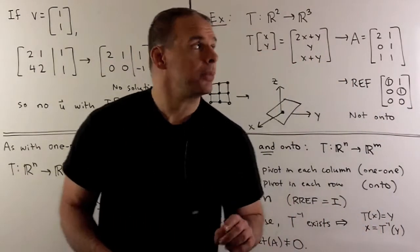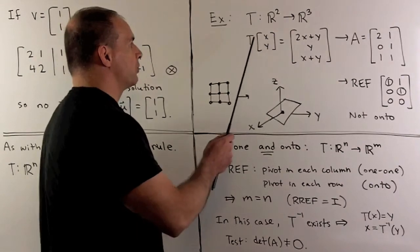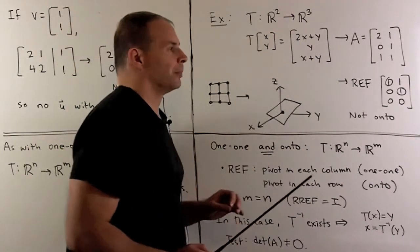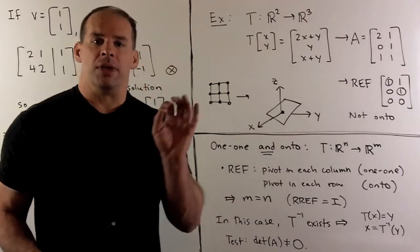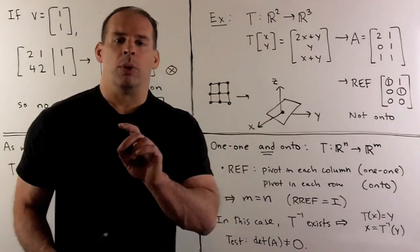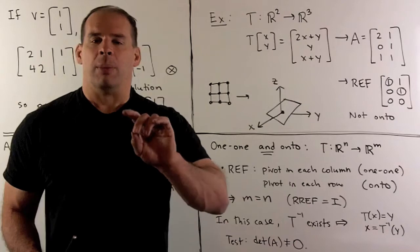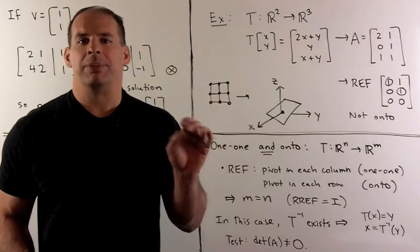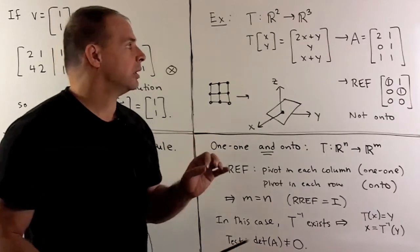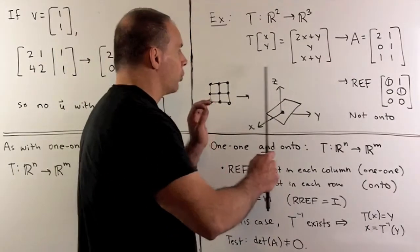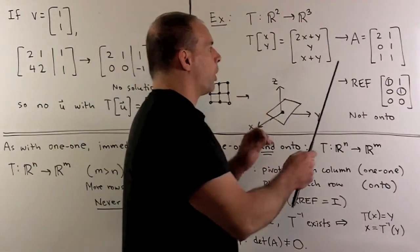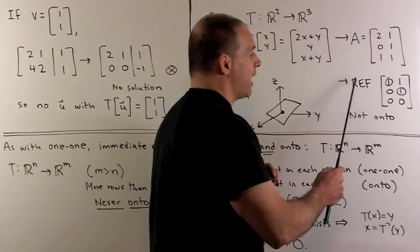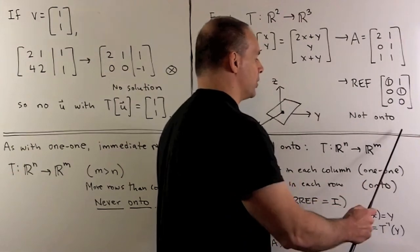For an example, let's consider the linear transformation T going from R2 to R3, given as follows. So if this were onto, then we would be trying to map a plane linearly onto all of R3. And intuitively, that's not going to happen. To see it concretely, we form our A matrix, we go to row echelon form, and then we see we don't have a pivot in each row, so it's not onto.